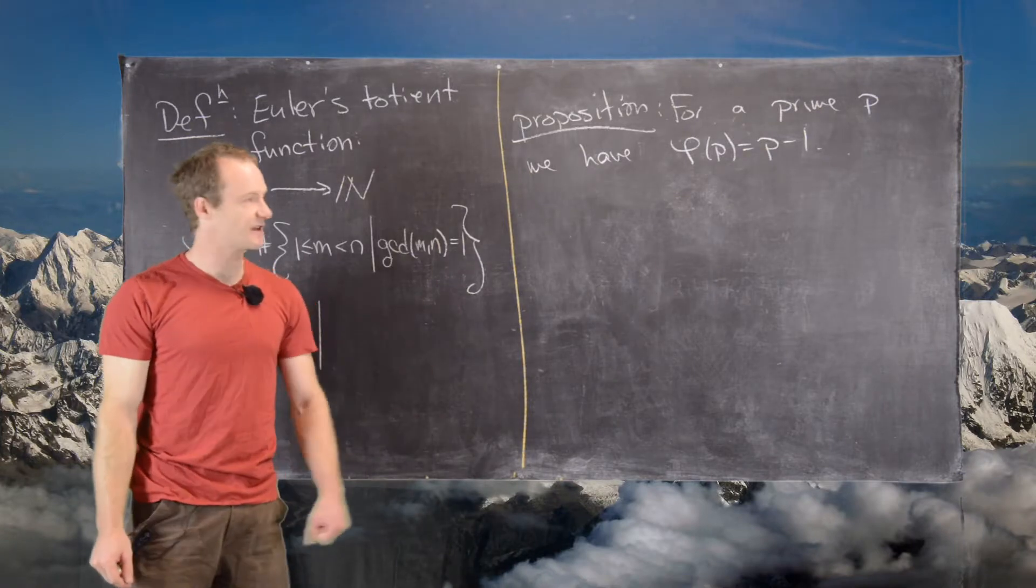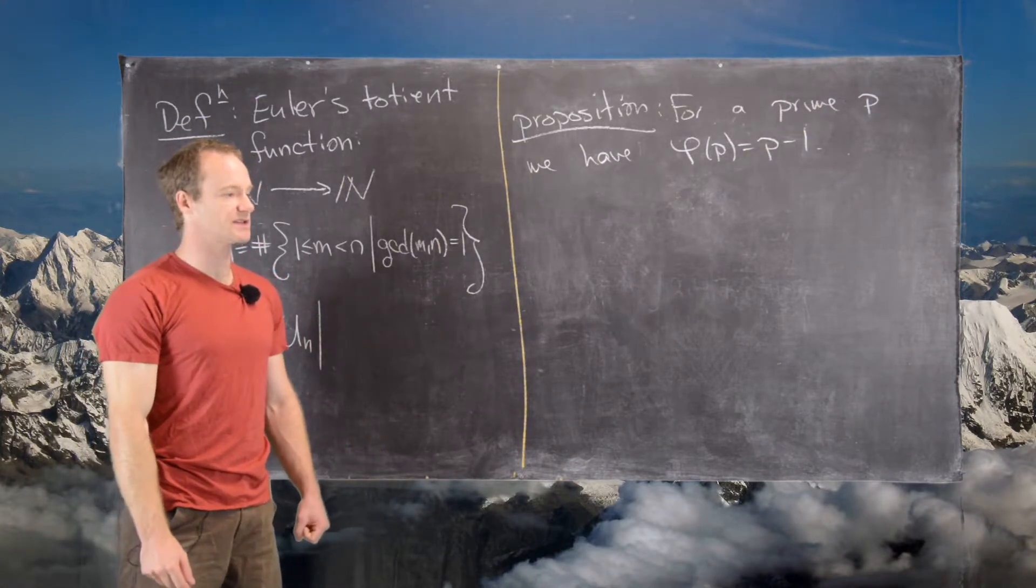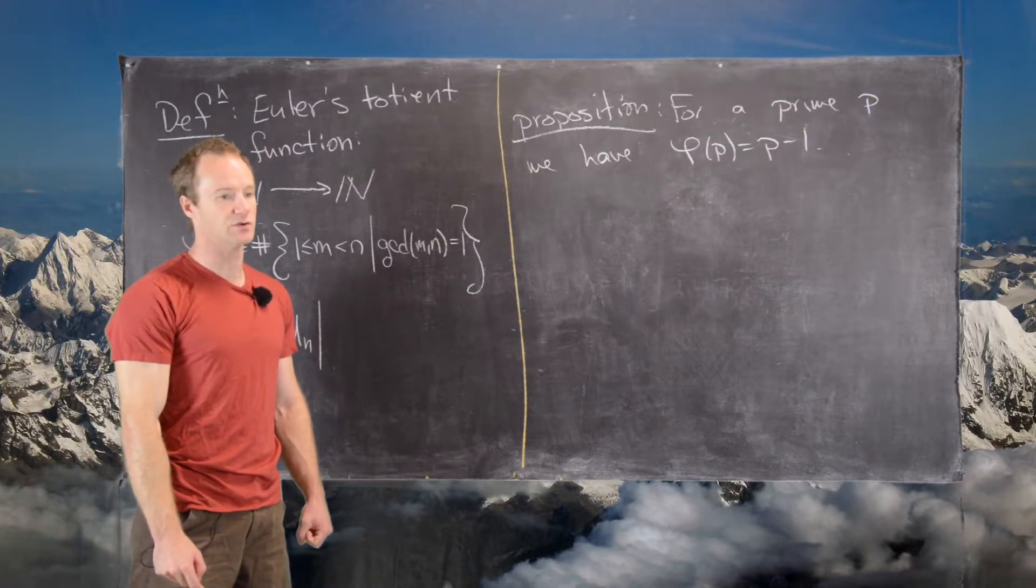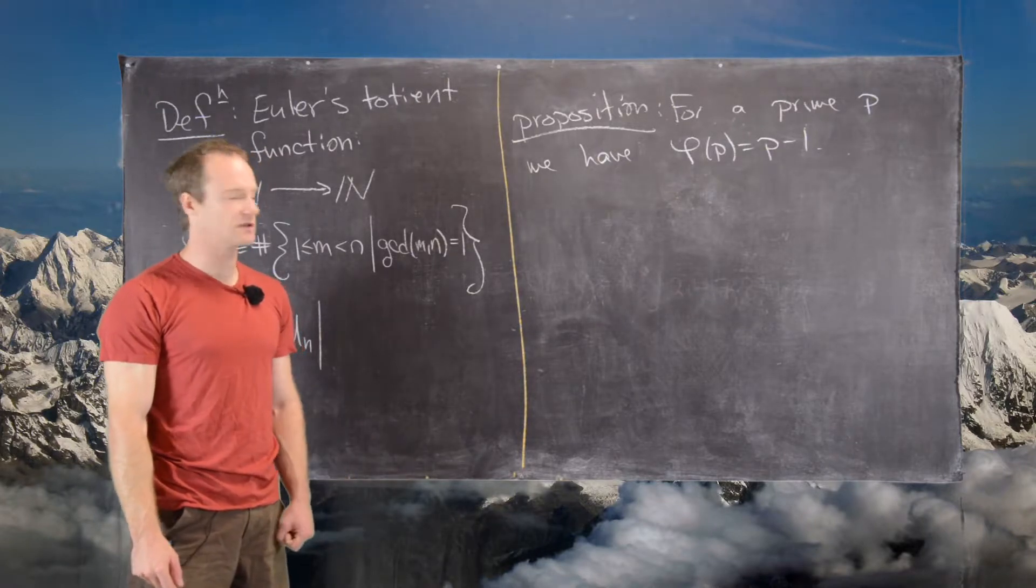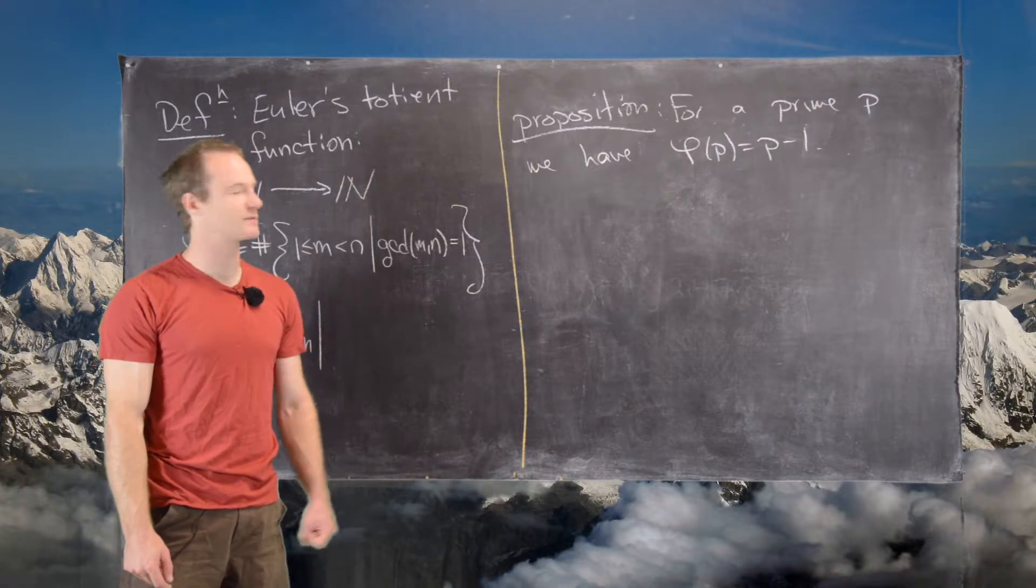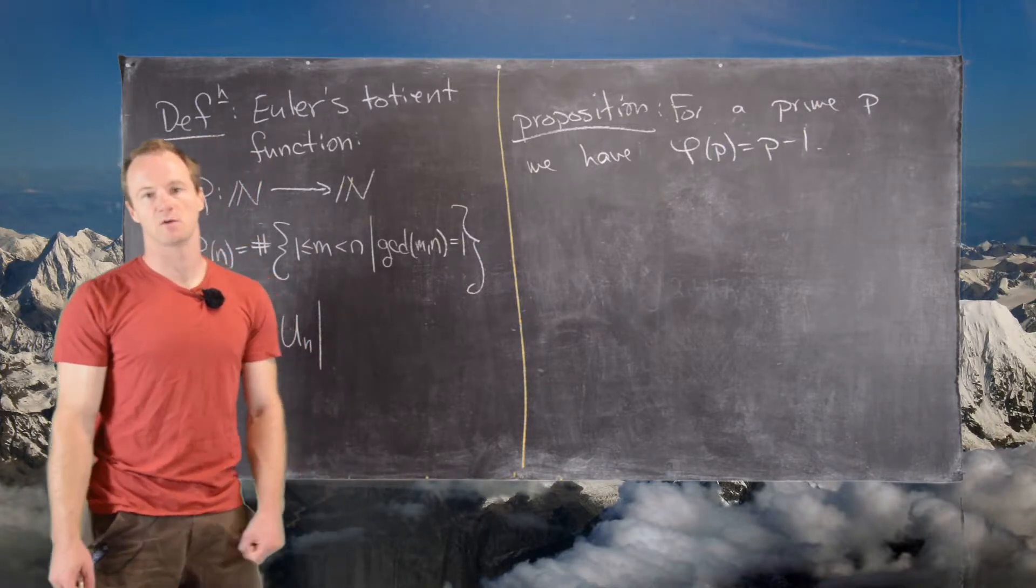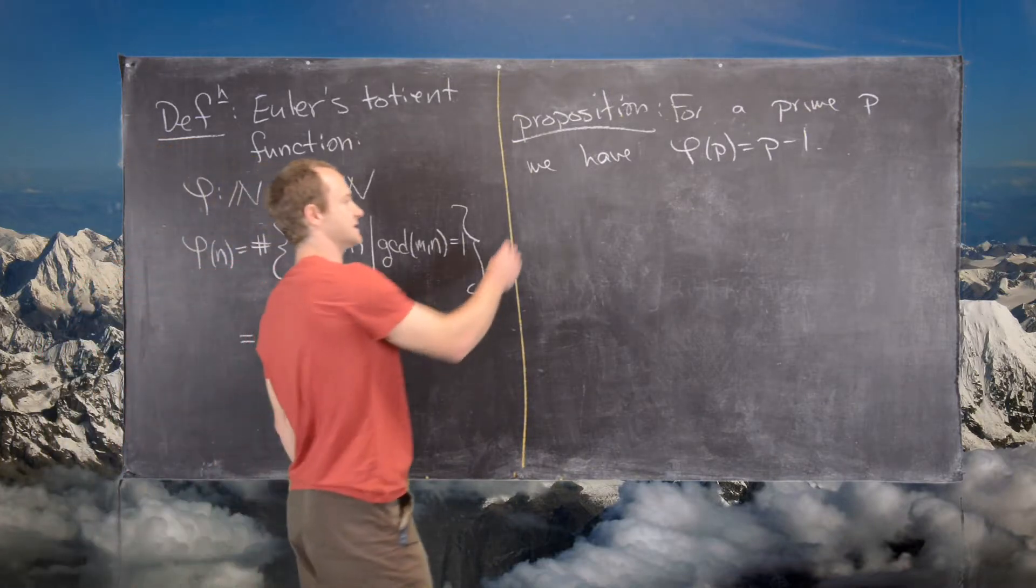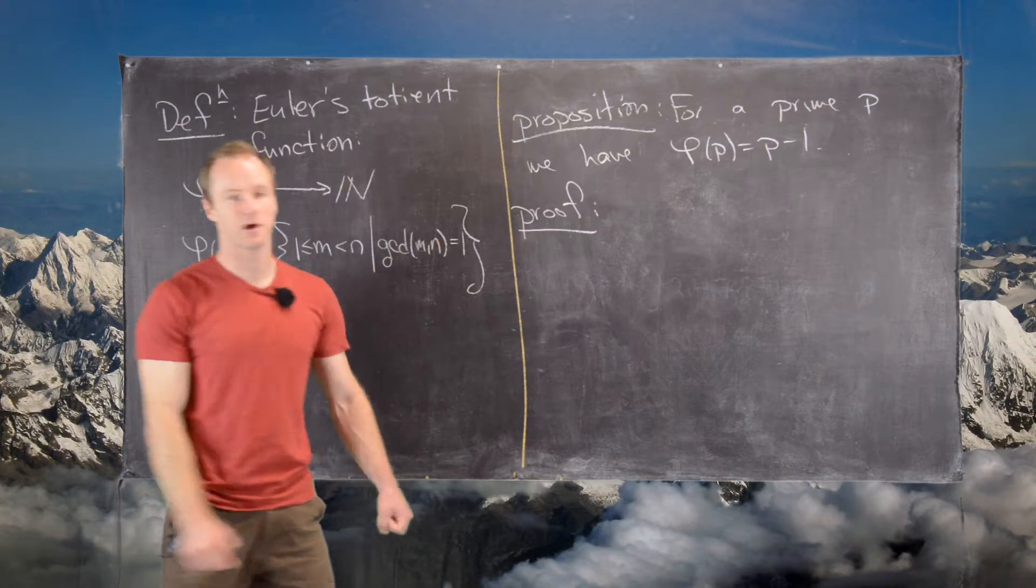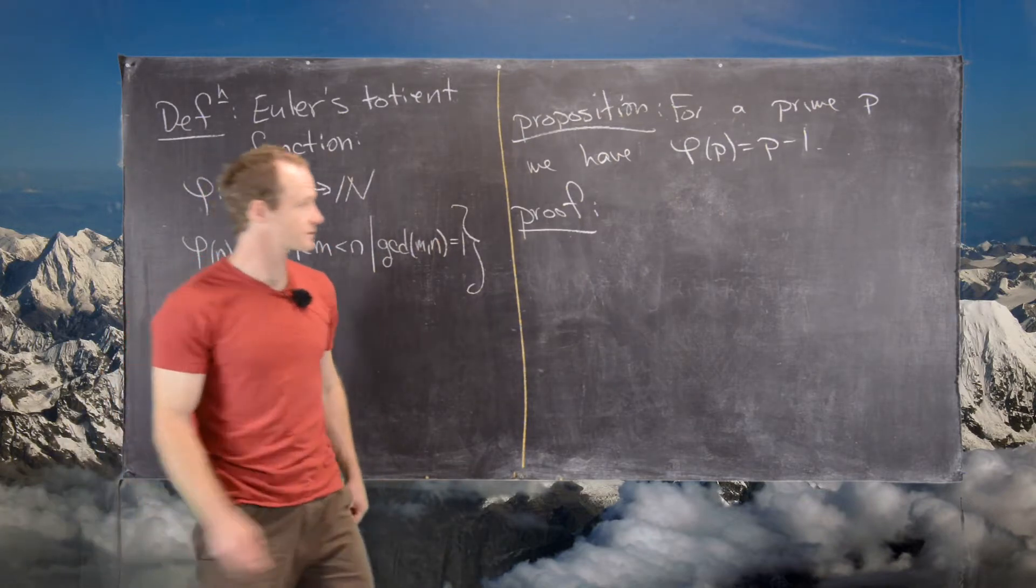Great, so maybe this is obvious, because the only things that are not relatively prime to a prime will be multiples of that prime, and everything smaller than P is not a multiple of that prime. But we'll look at a little more careful proof, just kind of for practice.